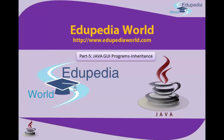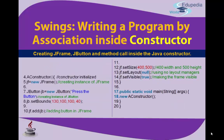Hello everyone and thanks for watching Edupedia World videos. This is Sabiuddin. We are continuing with the previous video where we left off — that was association of the constructor. Now we are continuing with Java GUI components with inheritance. We left over here with the swing writing a program by association inside constructor.